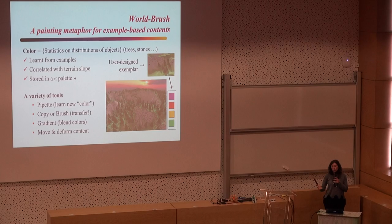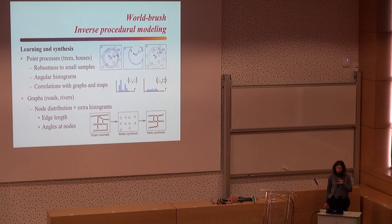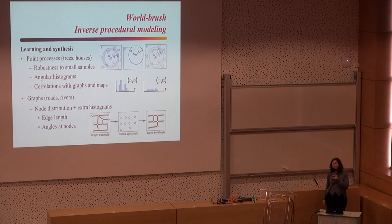We use point processes for this. We correlate the distribution of stones, trees, and blades of grass together, as well as with altitude, terrain slope, and other maps defined on the terrain. The stone has one of the colors in these palettes. You can then use a painting interface where the user uses tools like a pipette tool to learn a new color, and a brush to transfer. It's like the transfer of garments — the statistical distribution will not replicate exactly the same tree, but when you paint with a brush it gives the same distribution, consistent with the slope and so on. There are also gradient, move, and deform tools.